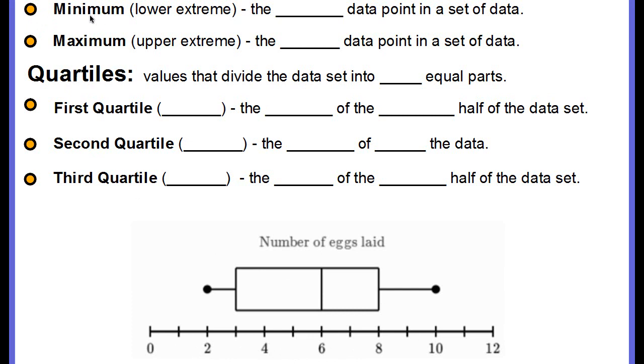Okay, the first data component is the minimum, also called the lower extreme. This is the smallest data point in a set of data. So on your box plot, this point right here is the minimum, or the lower extreme.